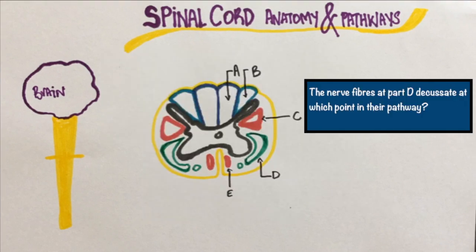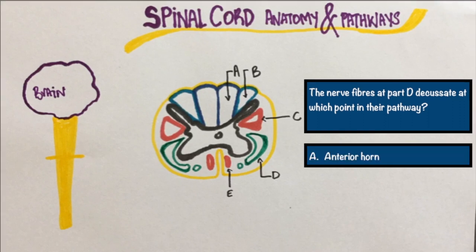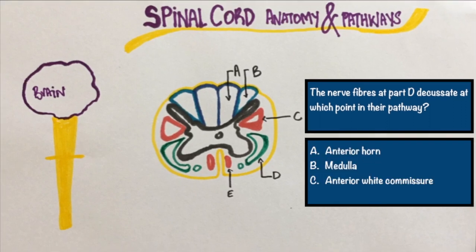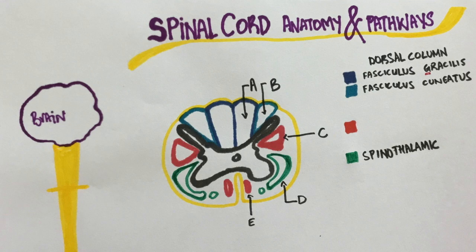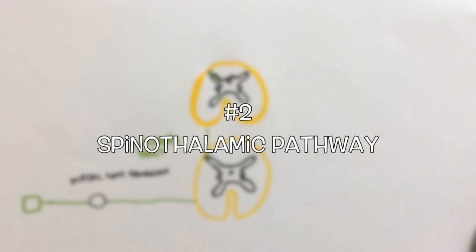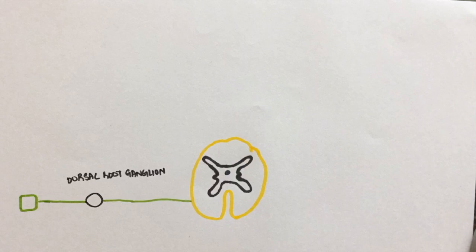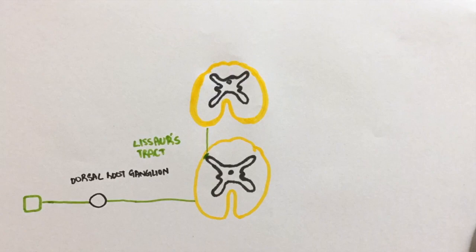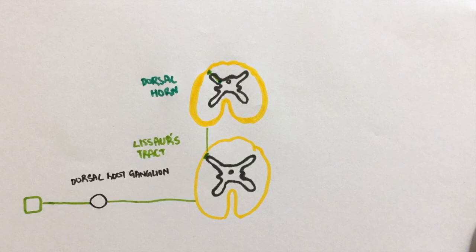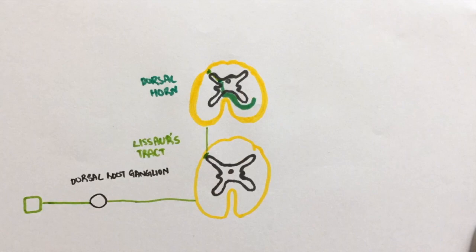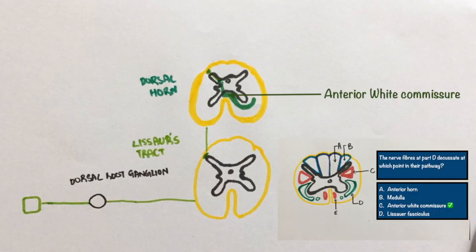Question 3: The nerve fibers at part D decussate at which point in their pathway? Option A, anterior horn. Option B, medulla. Option C, anterior white commissure. Option D, Lissauer's fasciculus. D represents the spinothalamic tract, which is responsible for sensing pain and temperature. The sensory fibers enter the dorsal root ganglion. From there, they get to the spinal cord, where they ascend by one or two levels in the Lissauer's fasciculus. After going up, they synapse at the dorsal horn, which is present in the gray matter of the spinal cord. From here, they decussate via the anterior white commissure to get to the contralateral spinothalamic tract.